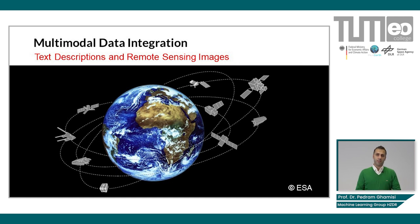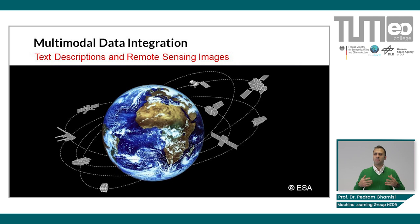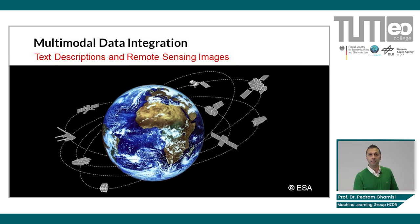We are now in the era of massive data acquisition. It is now completely possible to have a wide variety of remote sensing data from all over the earth, and we can have different products out of these images and datasets as well. This forms the backbone of multimodal data integration, because we want to use different modalities at the same time to improve the quality of downstream tasks. But one modality that hasn't been investigated to its full potential is text descriptions. What I want to do here is integrate text descriptions and remote sensing datasets together for a variety of applications.